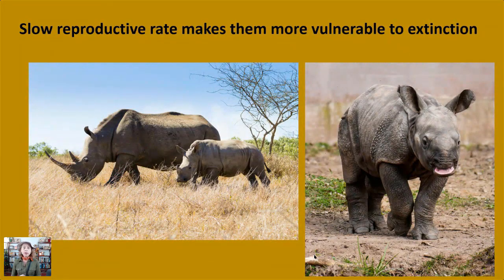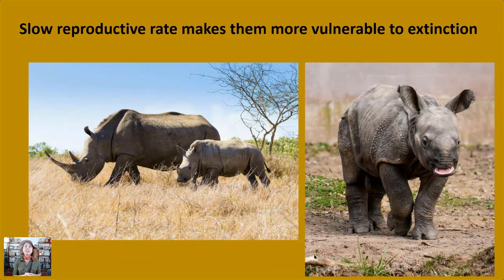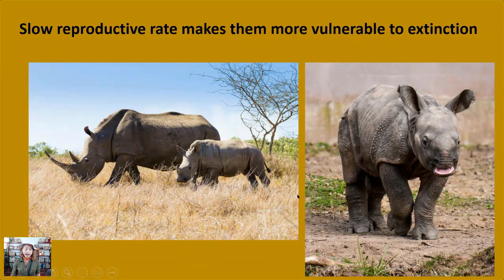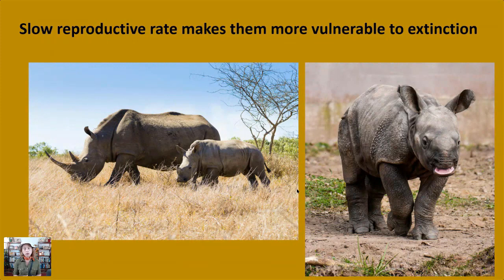Another thing that makes them vulnerable to extinction is their slow reproductive rate. The female has a gestation or pregnancy of about 16 months. She only has one calf, nurses that calf for over a year, and will keep that calf close to her for several years — making it more difficult to bounce back when their populations decline.